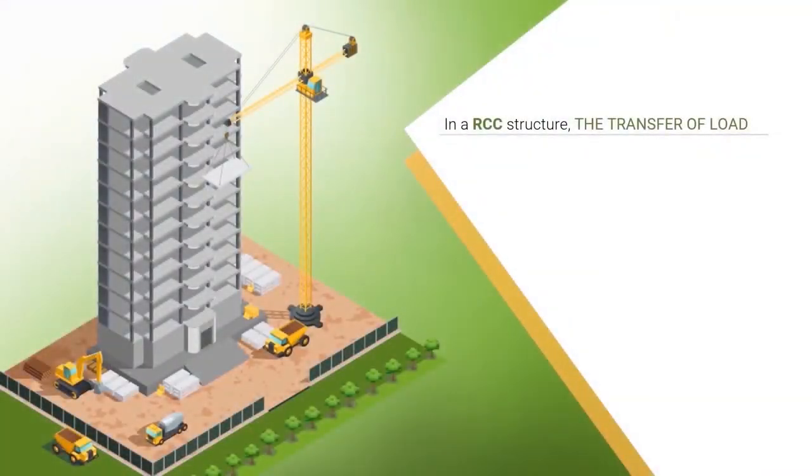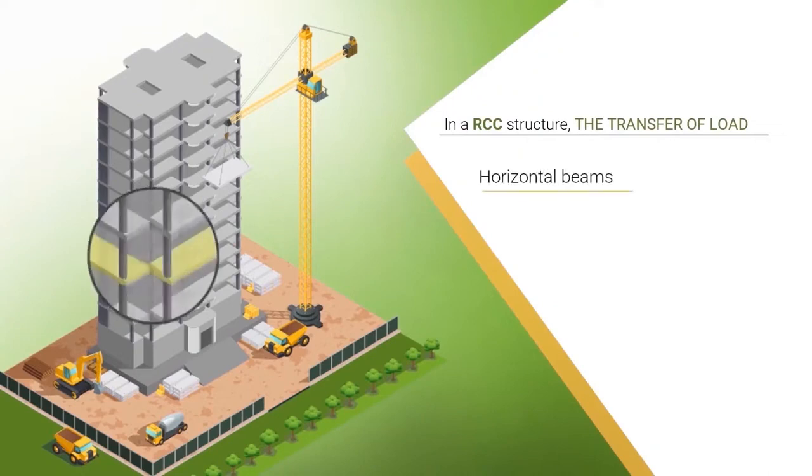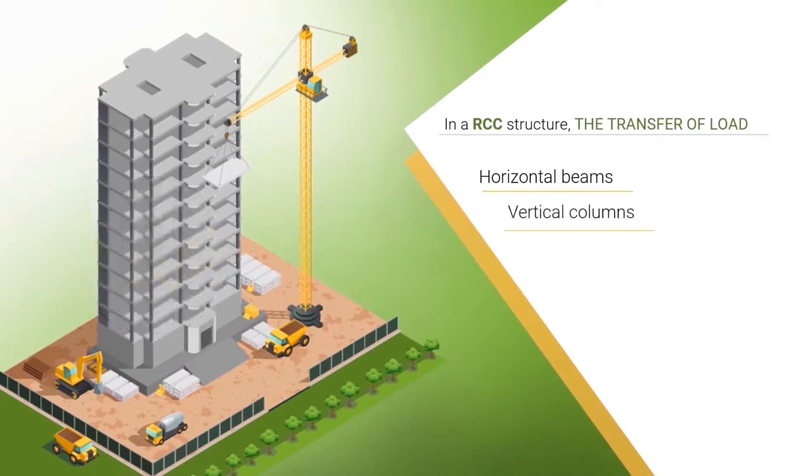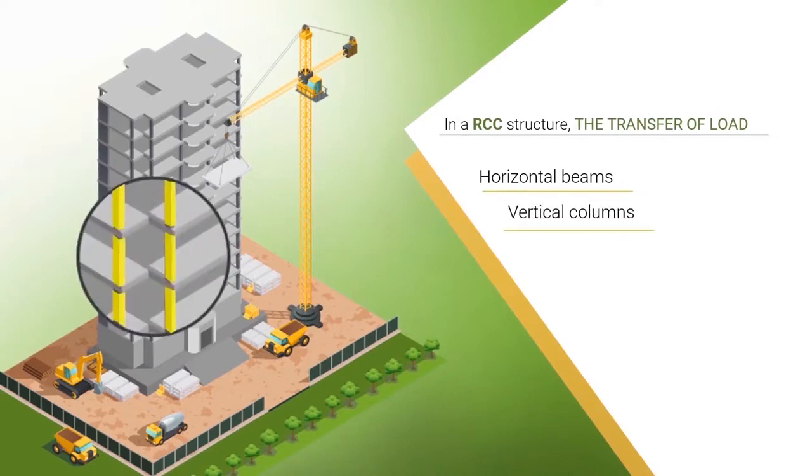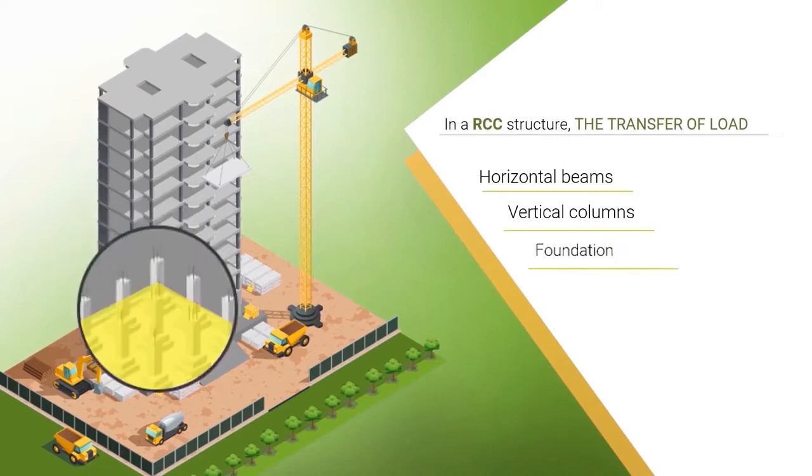In an RCC (Reinforced Cement Concrete) structure, the transfer of load is from the slab to the horizontal beams, then it is passed on to vertical columns, and then down to the foundation holding on to the ground.